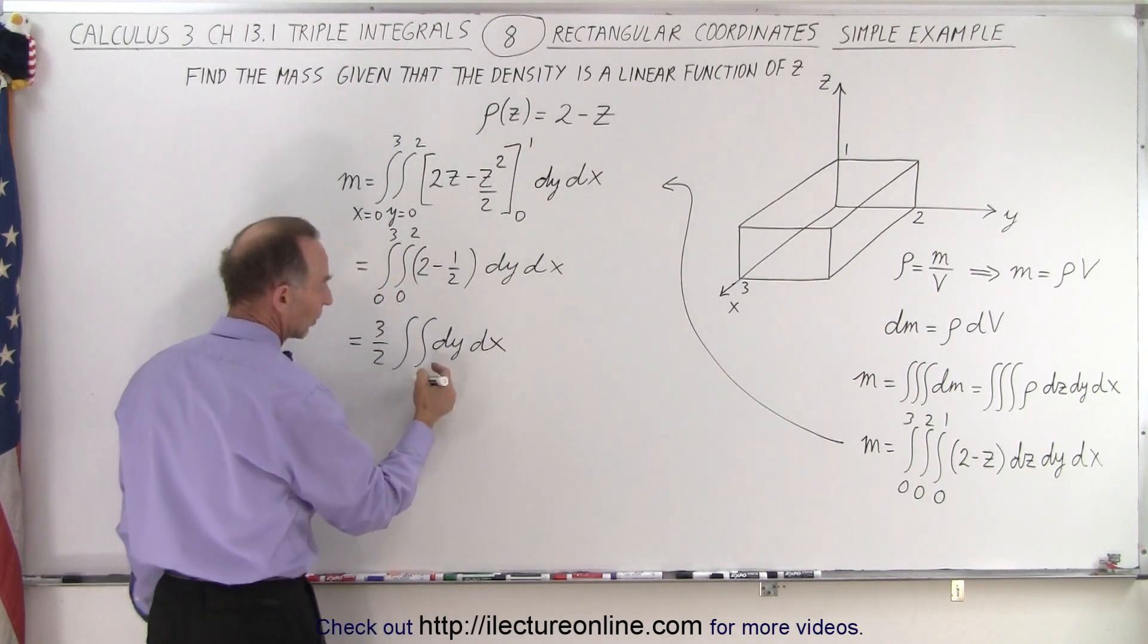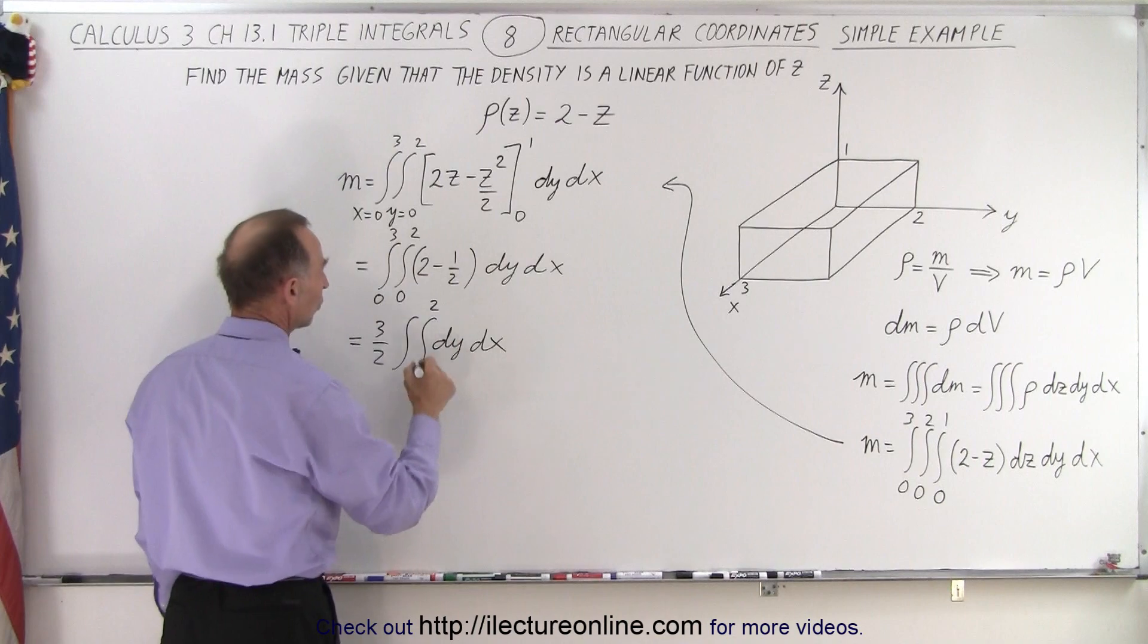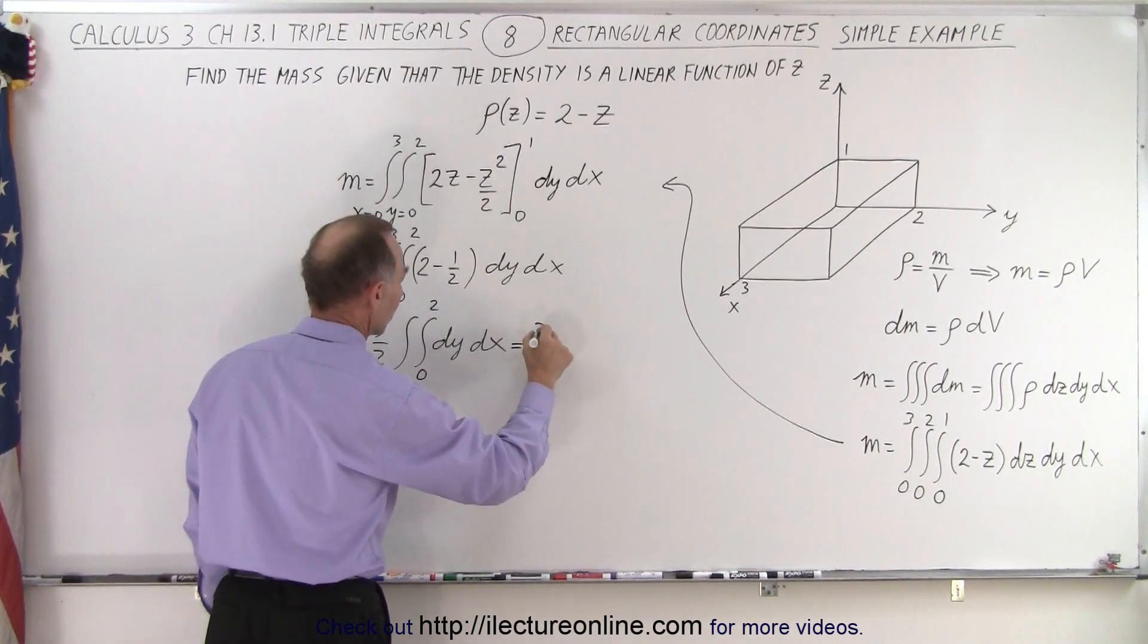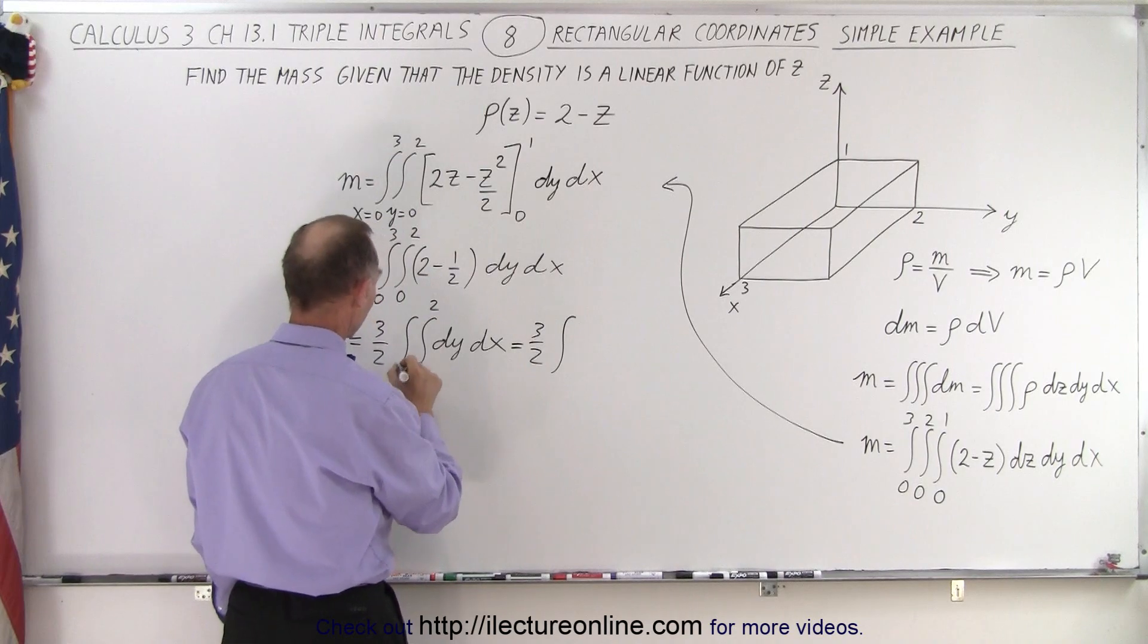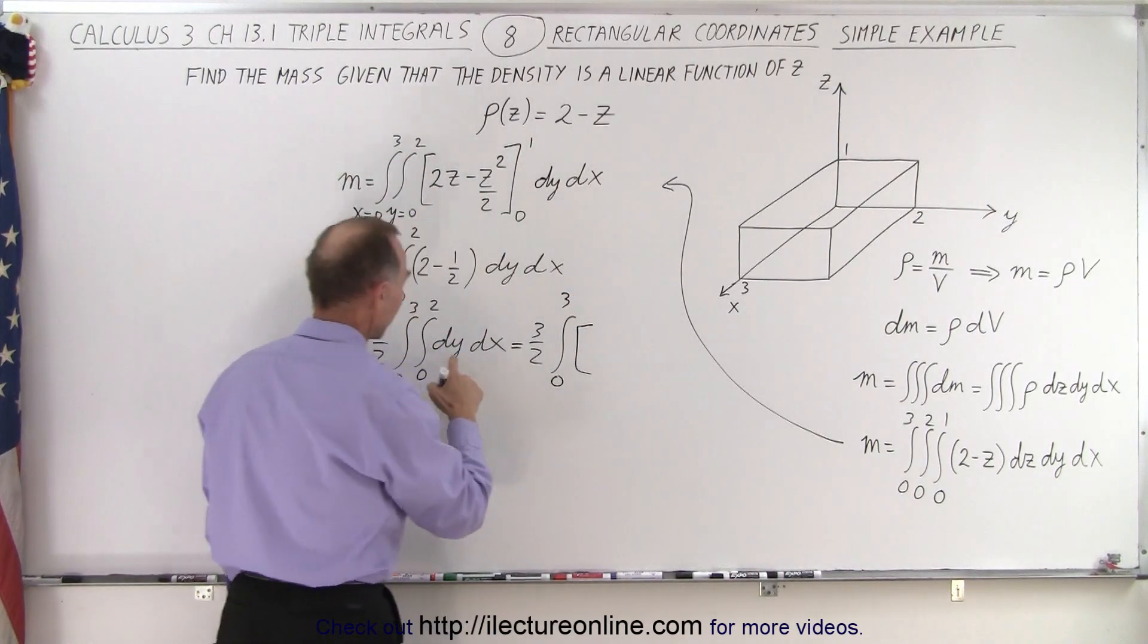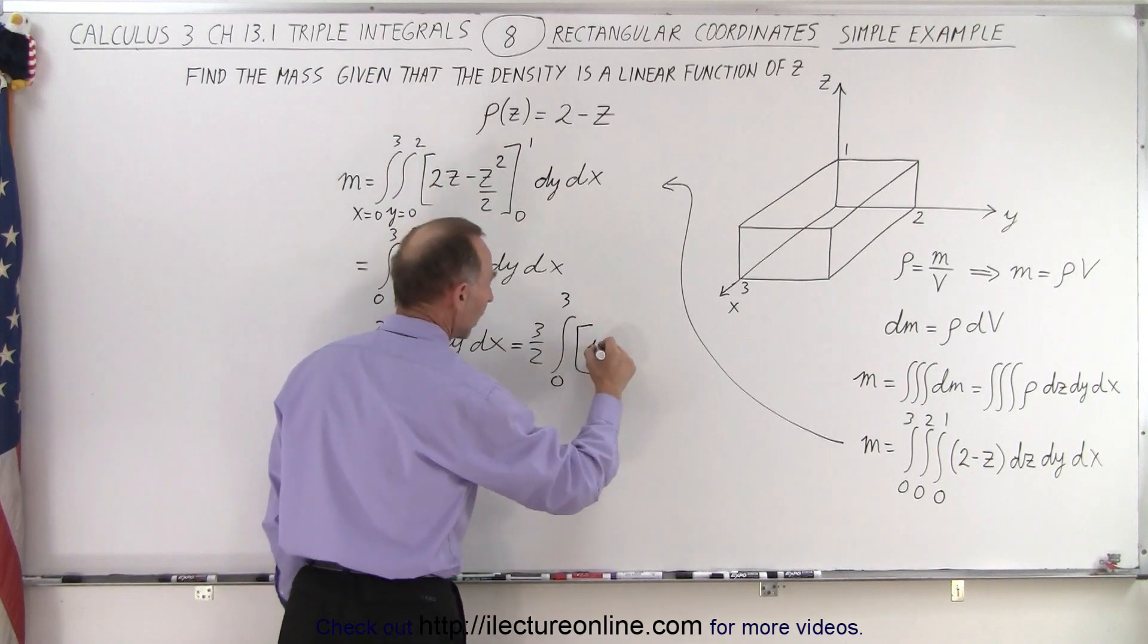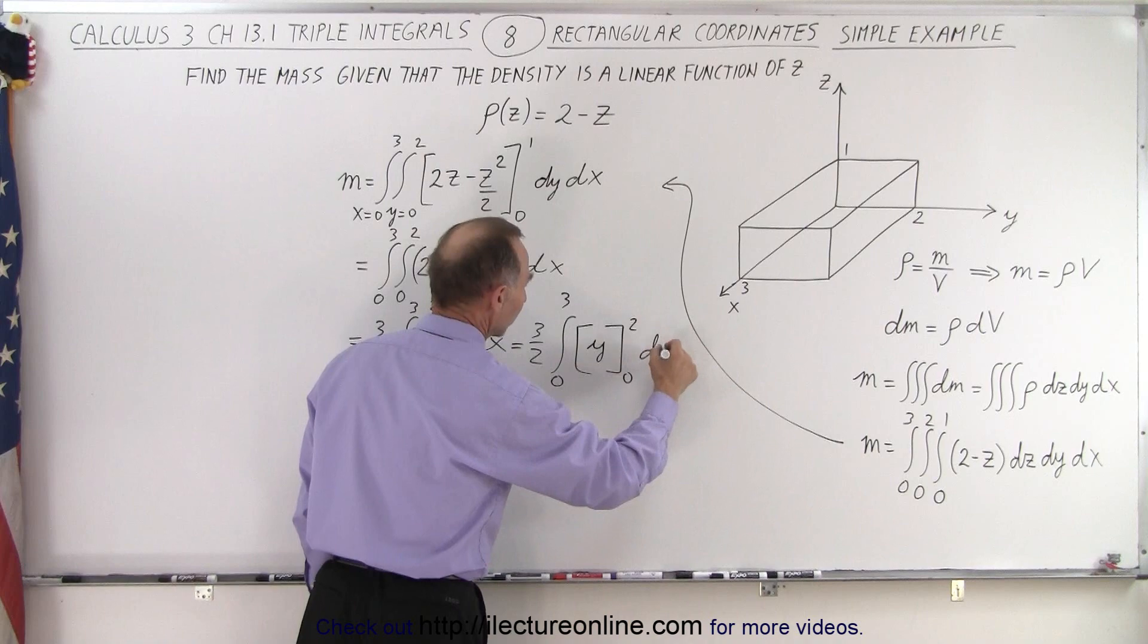And so the next integral we're going to integrate is over y. The limits of integration from 0 to 2. And so this becomes equal to 3 over 2 times, we still have our first integral here from 0 to 3. And when we integrate dy, we get y, and that's going to be evaluated from 0 to 2. We still have our dx here.